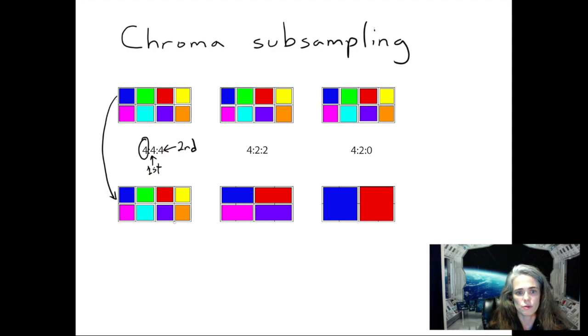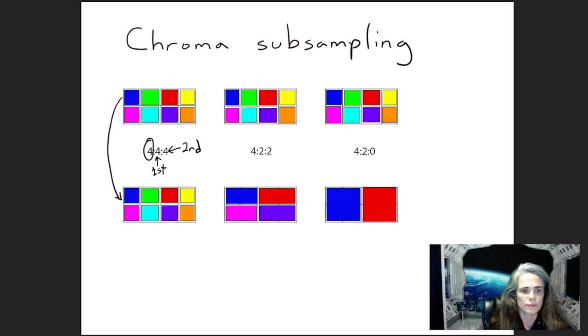This one and 4:2:0 are often used for surprisingly filming actually. This one is like probably a higher end camera where you're getting more data. And the 4:2:0 is probably like a webcam or like your camera on a phone or whatever, like it could be either one of these though.